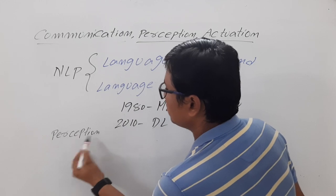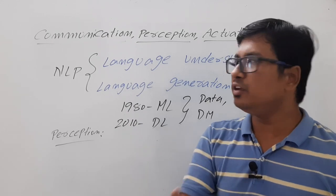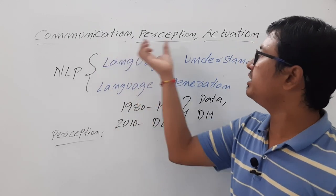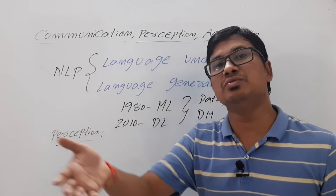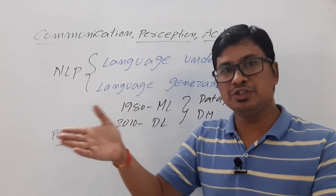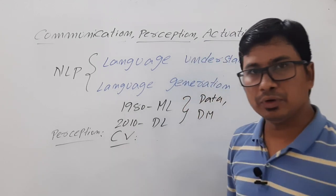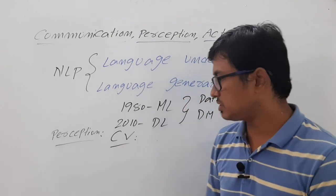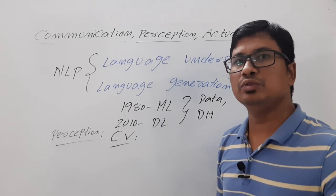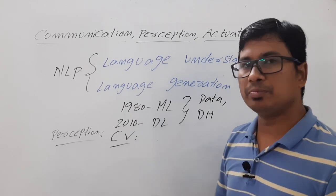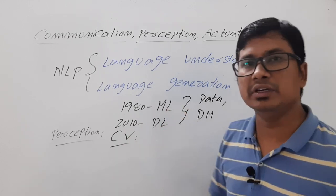Similarly, when it comes to perception — perception means the agent should learn by looking at things, just as you learn by watching this video. An agent should also learn from things that are visible. For this we look at the domain called computer vision, which solves many problems related to perception. In computer vision we also used expert systems earlier, but from the 1980s and 2010 we started using machine learning and deep learning techniques respectively.